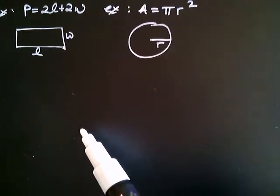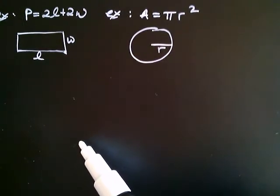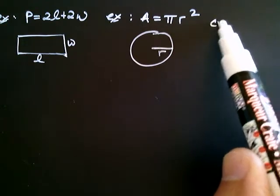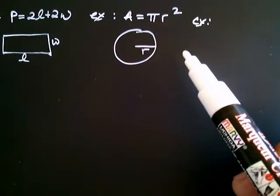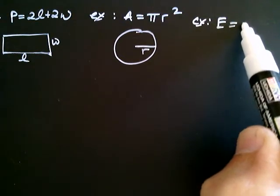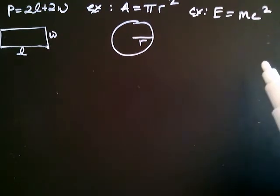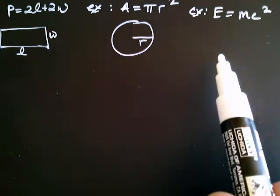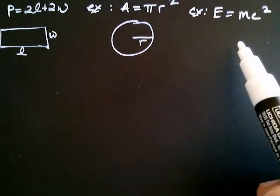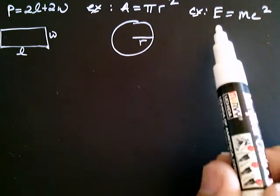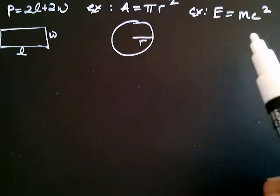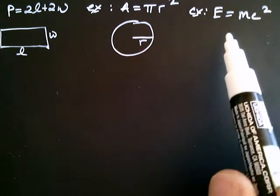Another formula that you may know or that you may have heard of but you maybe don't have much experience working with is this formula: E, capital E, equals MC squared. Now this formula is a little trickier to discuss but you may have heard that this is a formula that Einstein discovered in the early 20th century relating energy and mass. And C happens to stand for the speed of light. But for our purposes, at this stage, it's another formula you may have encountered.